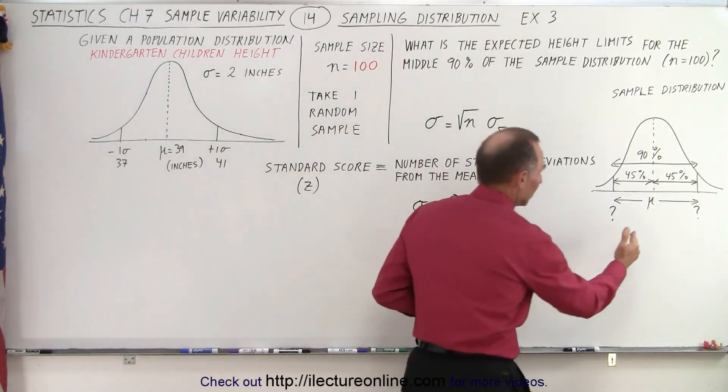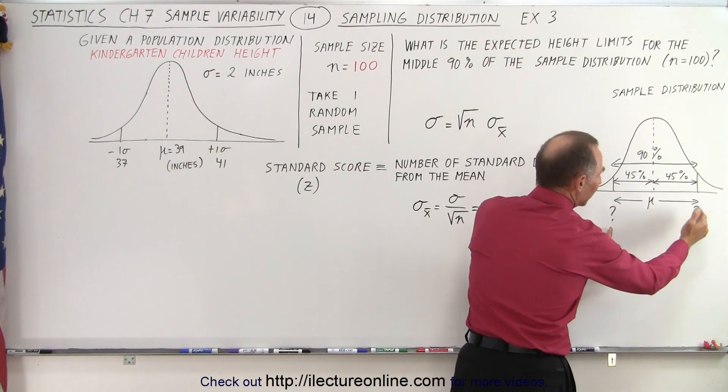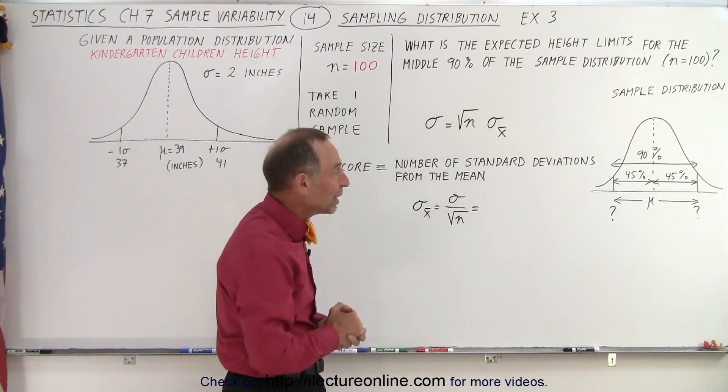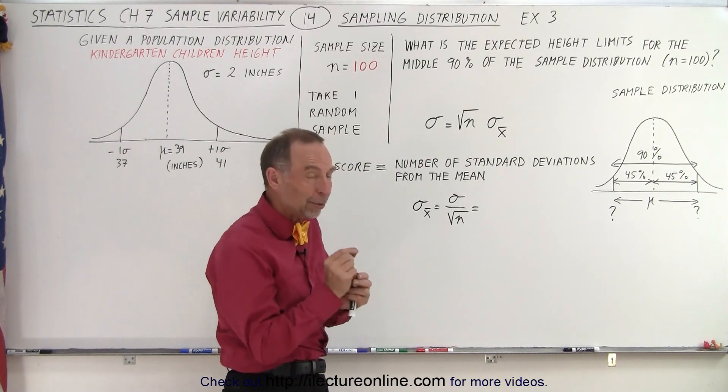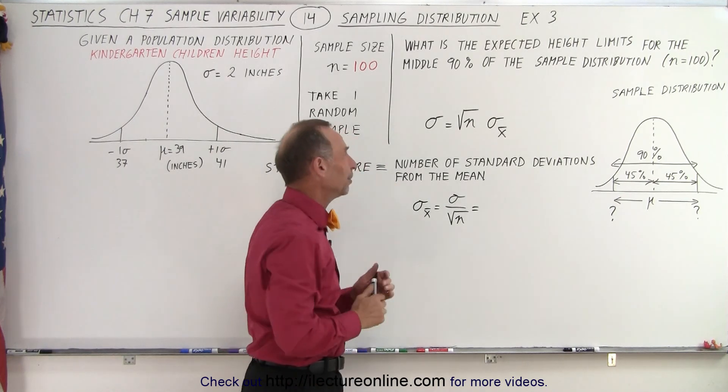So essentially we want to be between these two values. We don't know what these values are, that's what we're looking for. If we're looking for 90% probability of being between those two values of height, that would be the average or the mean of that one single sample.